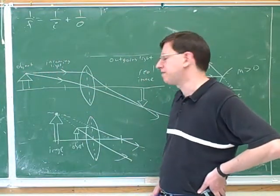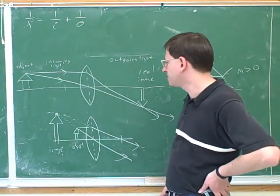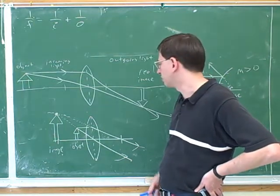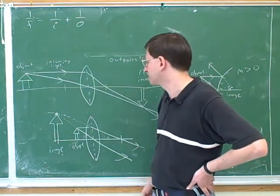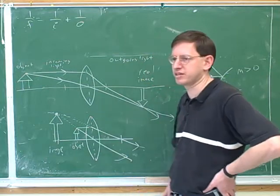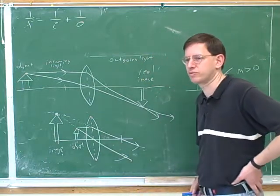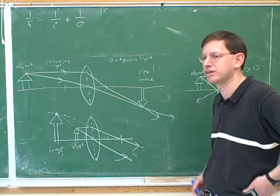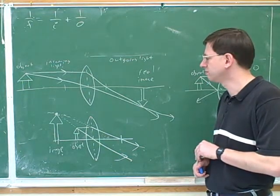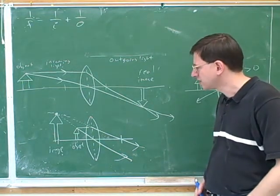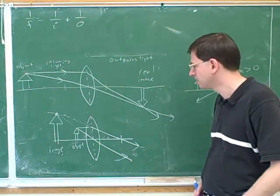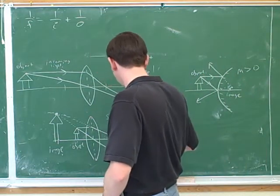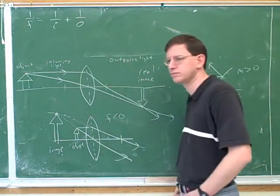Let's take a look at this picture and figure out all the different pieces of information that this picture tells us. What are some pieces of information we can get from here that we might plug in someplace else? What does it tell us about the various variables we've been talking about? That f is going to be less than zero — because it's diverging.